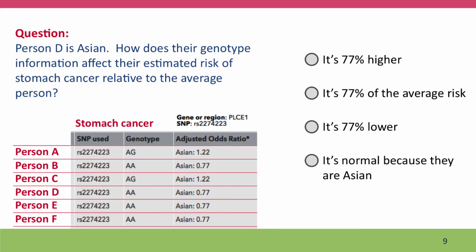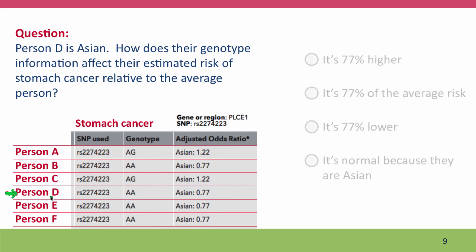So here's the question: Person D is Asian. Given the information about their odds ratios, how does having this information change the estimate of risk of stomach cancer for Person D relative to the average person? Let's find out.